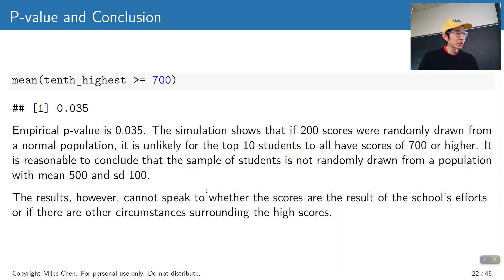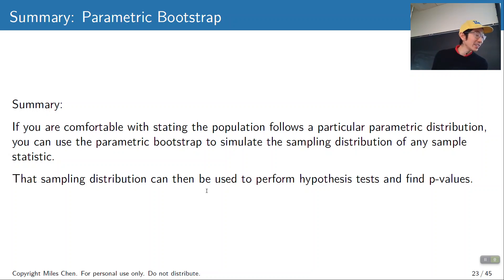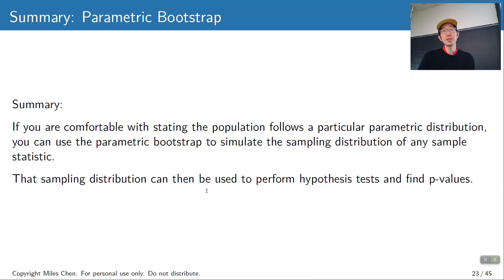That's how parametric bootstrap works. The second view quiz answer is C — C as in cat. The first answer was A, and the second is C. With parametric bootstrap, you have to make parametric assumptions about the population — you have to say the population follows this distribution — and if you're comfortable with that, you can simulate and get your answers.